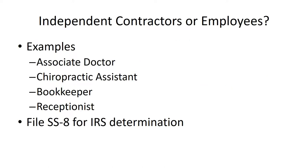In a typical chiropractic office, an associate doctor is almost certainly an employee. The owner of the clinic is typically telling the doctor when to work, what forms to use, how to treat patients, how to bill for services, and how to collect — all directed by the owner. Because of that level of control, the associate doctor is not an independent contractor.